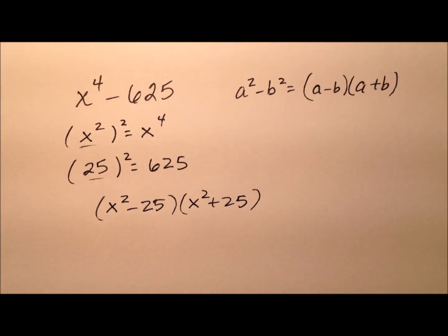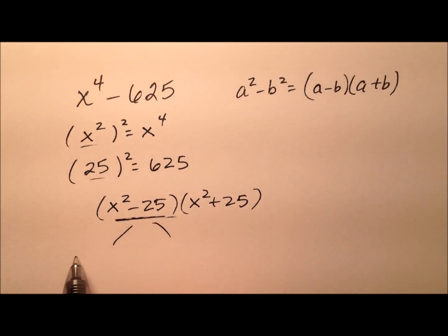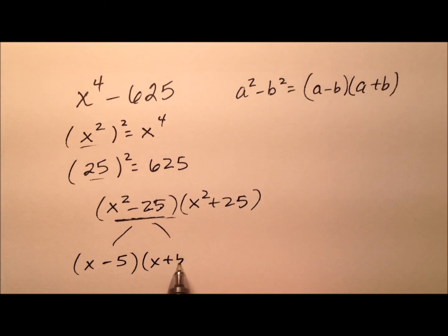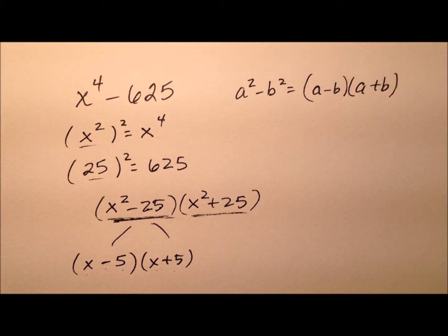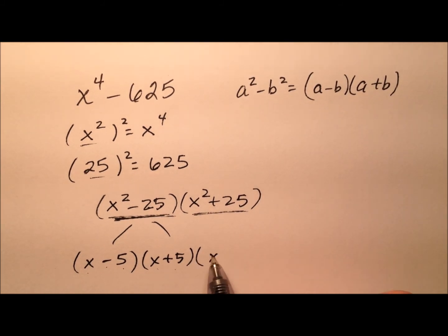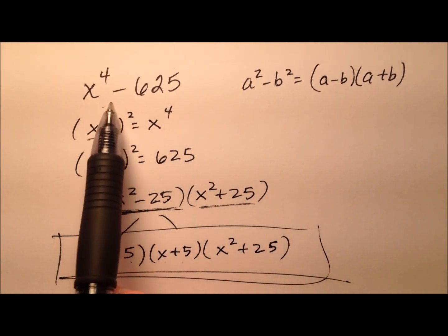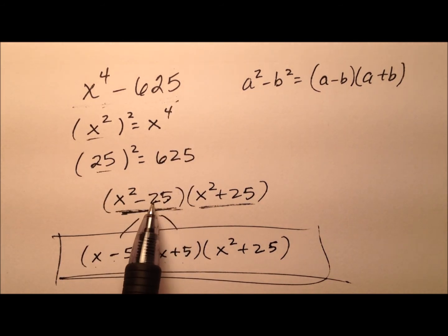But we're not done, because x squared minus 25 is actually another difference of squares. The square root of x squared is x, and the square root of 25 is 5. So this difference of squares factors further into x minus 5 times x plus 5, while the sum of squares x squared plus 25 does not have a factorization over the real numbers, so we leave that alone. Here is our fully factored form for the original difference of squares — inside we found another difference of squares.